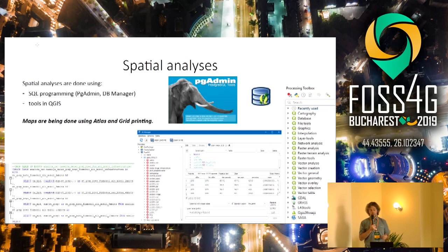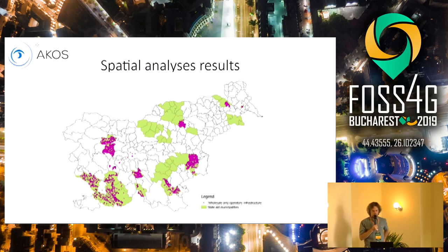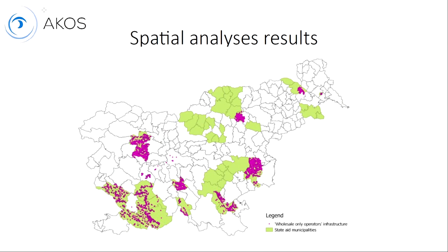For spatial analyses, SQL is the main tool; some analyses are also made with DB Manager in QGIS and some using the Processing Toolbox. Here are some results of what we are doing. In this picture the green municipalities are areas — this picture is about four or five years old — where at that time there was no optic fiber internet connection. There was state aid and European aid to help the people who live there, so operators built electronic communication lines and network termination points.